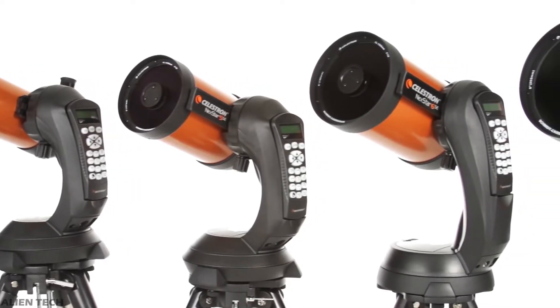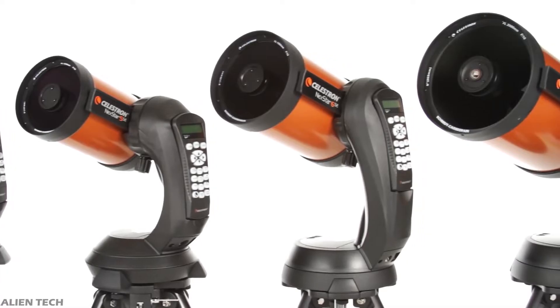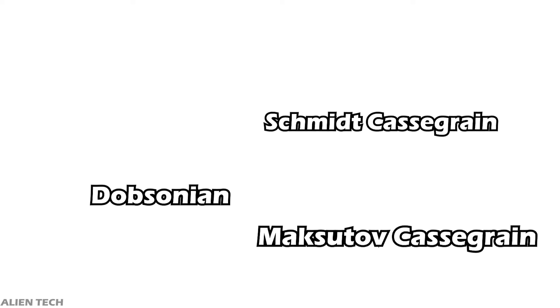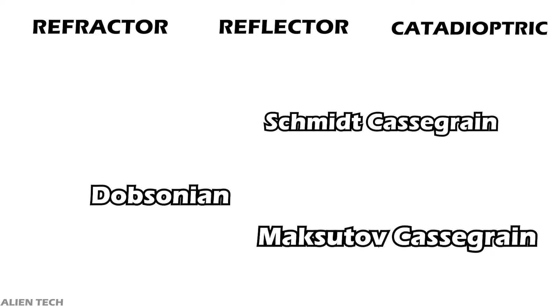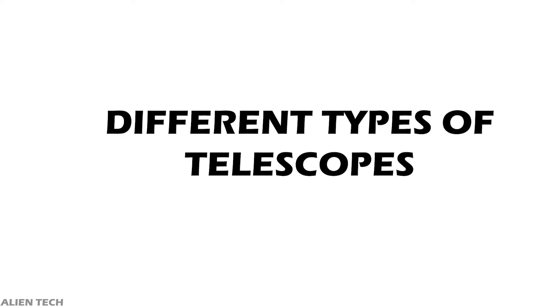Hey guys, welcome to the channel. If you're a beginner and you just started looking for telescopes to buy, you will come across different types of telescopes: a refractor telescope, a reflector telescope, and a catadioptric, also known as compound type telescope. You might come across other types such as Dobsonian, Schmidt-Cassegrain, or Maksutov-Cassegrain — they all come under one of these main three types, whether a telescope is large or small.